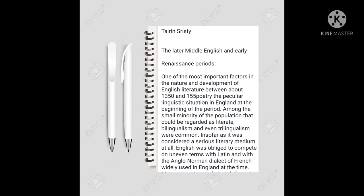Assalamu alaikum, I am Shresti. Today I am going to talk about the Later Middle English and Early Renaissance periods. One of the most important factors in the nature and development of English literature between about 1350 and 1550 was the peculiar linguistic situation in England. Among the small minority of the population that could be regarded as literate, bilingualism and even trilingualism were common. English was obliged to compete on uneven terms with Latin and with the Anglo-Norman dialect of French widely used in England at that time.